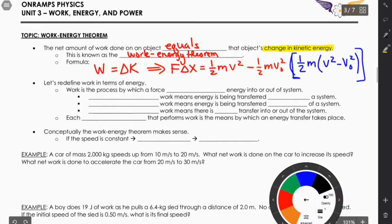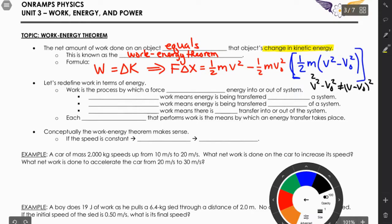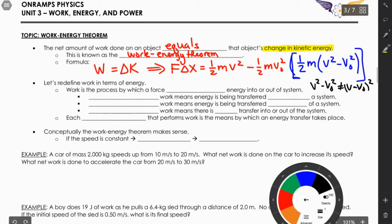Remember: v² - v₀² does NOT equal (v - v₀)². Here's a quick numerical proof — take 3² minus 2²: that's 9 minus 4 equals 5. Now (3 - 2)² = 1² = 1. Five does not equal one. So those two expressions are not the same, and students need to be careful not to confuse them.